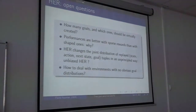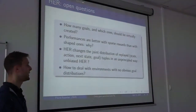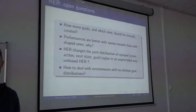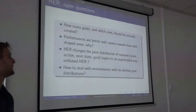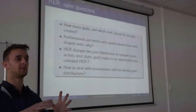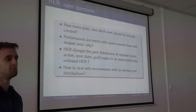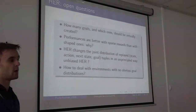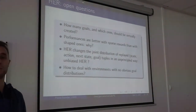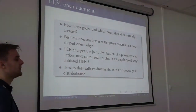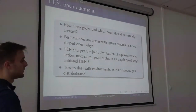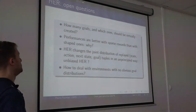Another question is how to deal with environments where there is no obvious goal distribution. In manipulation environments, the goal state is Euclidean space, so it's easy to sample from. But in cases like half-cheetah, it becomes difficult to define goals — the minimum speed over an episode, or average speed, might be interesting, but there are environments where it's absolutely not obvious how to sample goals.